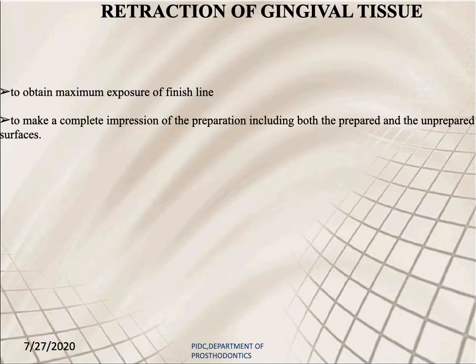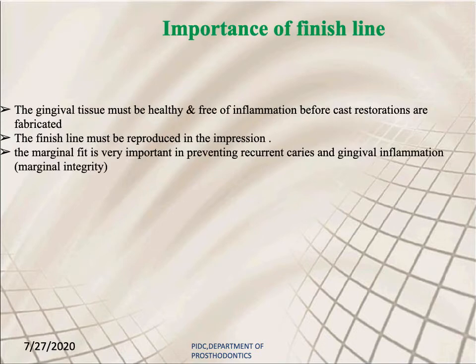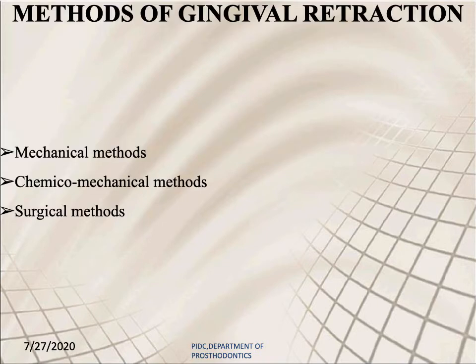Retraction of gingival tissue is done to obtain maximum exposure of the finish line and to make a complete impression of the preparation, including both prepared and unprepared surfaces. The gingival tissue must be healthy and free of inflammation before cast restorations are fabricated. The finish line must be reproduced in the impression, as marginal fit is very important in preventing recurrent caries and gingival inflammation. Methods of gingival retraction include mechanical, chemical-mechanical, and surgical methods.